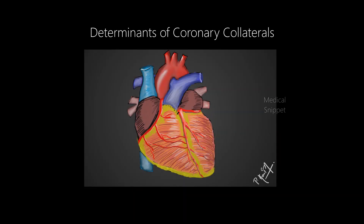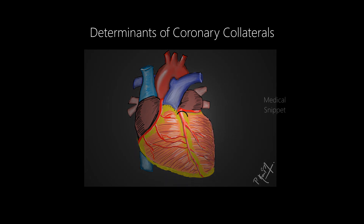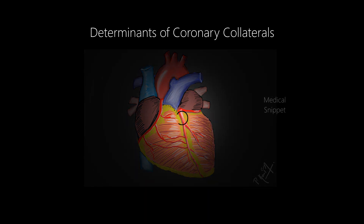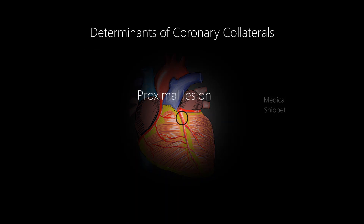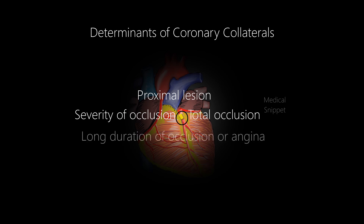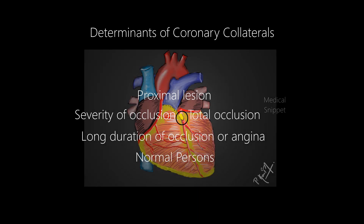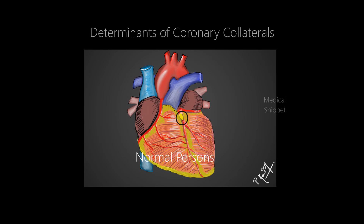Let's see the determinants of coronary collaterals. When there is a proximal occlusion in a coronary artery, there is a high chance of forming coronary collaterals. When the occlusion is more severe — for example, total occlusion — there is a higher chance of collateral formation. Also, when the duration of occlusion or angina is longer, more collaterals form. Coronary collaterals can even be present in some normal persons.